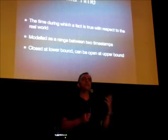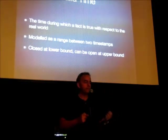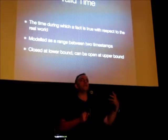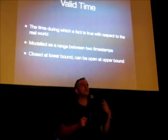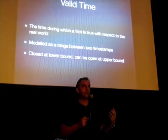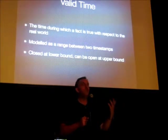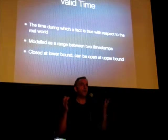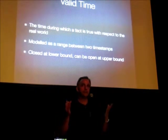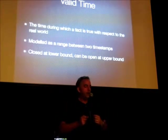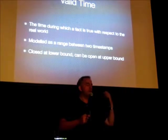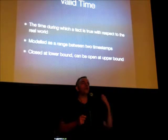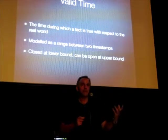To move on from that, we have to consider what's called in temporal theory valid time. Valid time is the time in which a fact or piece of information stored in a database is considered to be true to the real world. It's modeled using a range between two times, between two dates — a period of time for which this piece of information is considered to be true. Valid time is always closed at the lower end; when you insert a record, you have to insert something that says when the valid time begins.